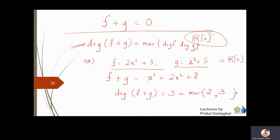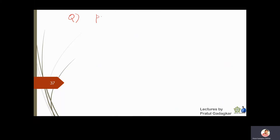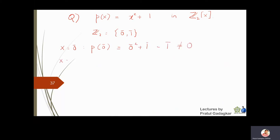Now let's find zeros of some simple polynomials. Take f(x) = x^2 + 1 in Z2[x]. The elements of Z2 are 0-bar and 1-bar. Substituting 0-bar gives 0+1 = 1-bar ≠ 0. Substituting 1-bar gives 1+1 = 2-bar = 0-bar in Z2. So x^2 + 1 has one root, x = 1-bar, in Z2[x].